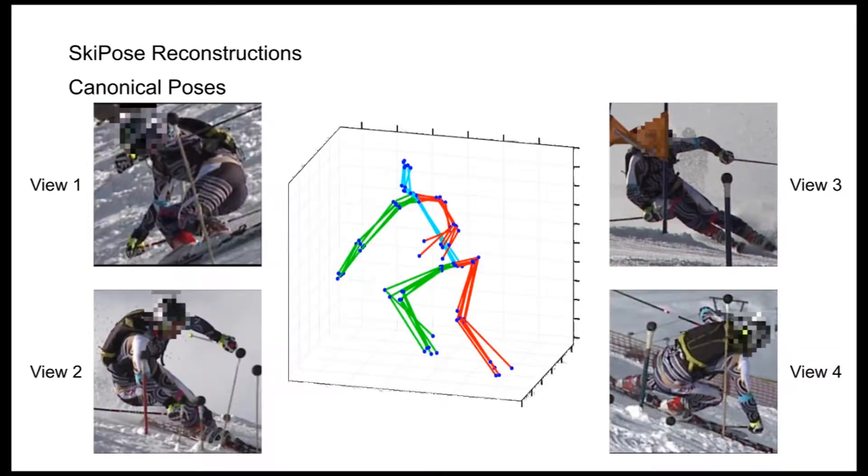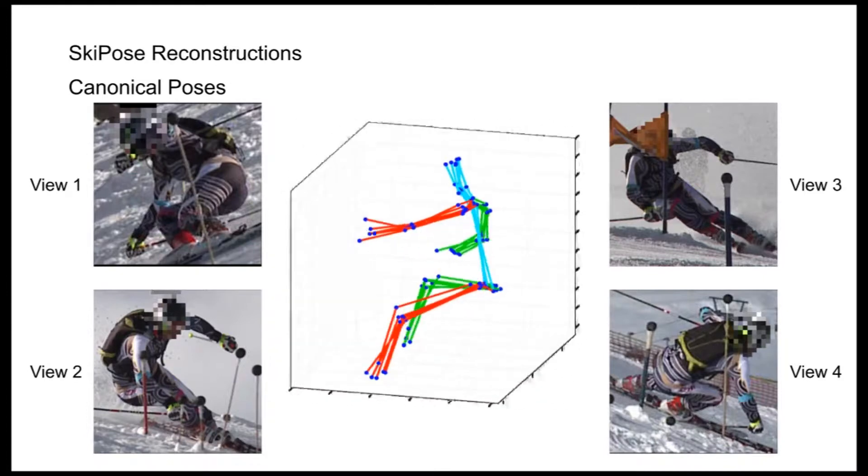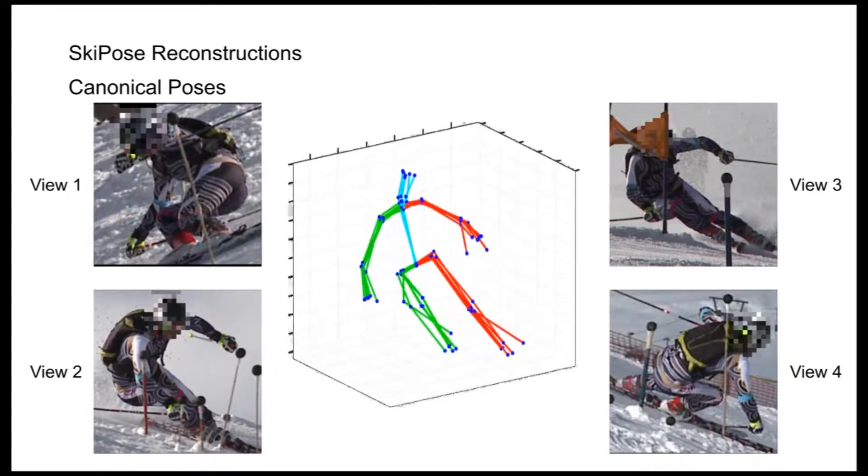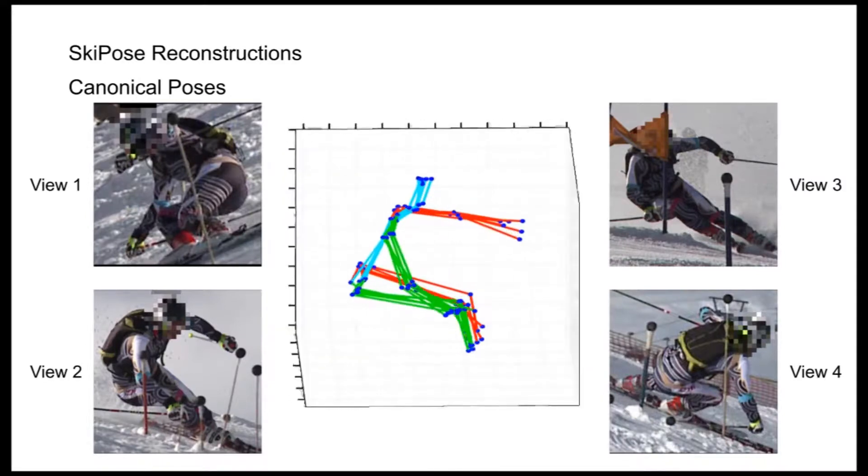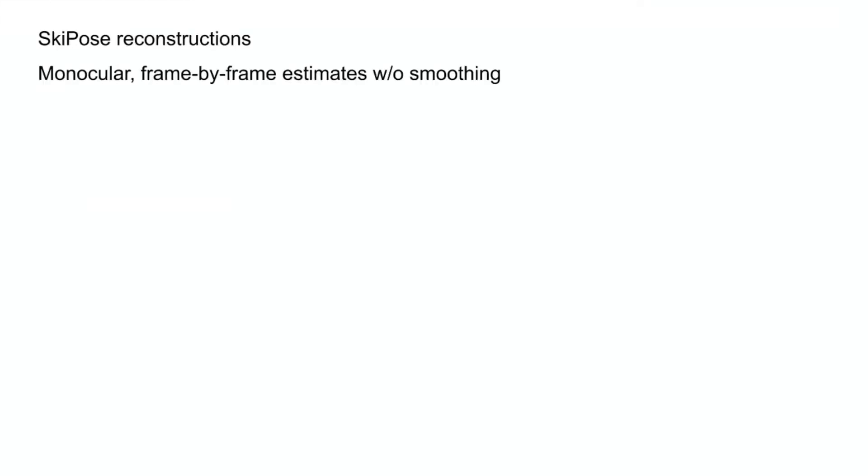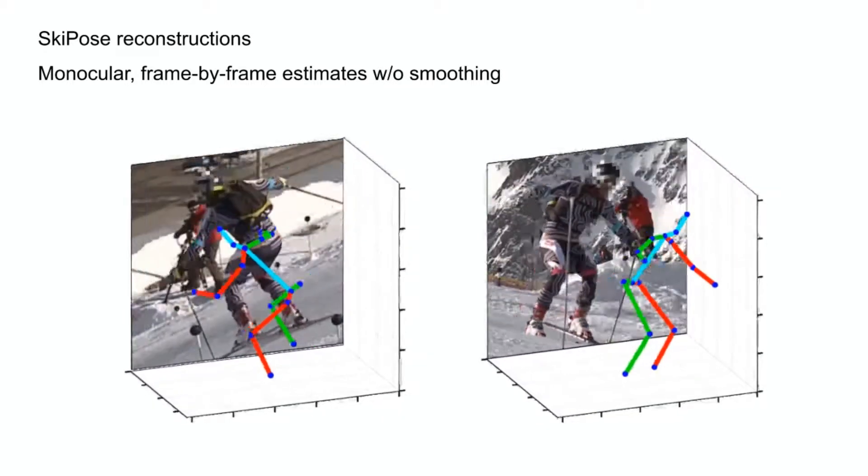Here we trained our approach on multi-view recordings of skiers. During inference, only a single input is used to reconstruct the skier. In the middle, you see the reconstructions from multiple views that are nicely aligned in canonical space, again without any constraints on their alignment. Although we only consider single images, we show results for sequences.